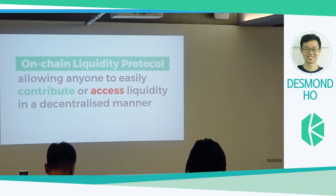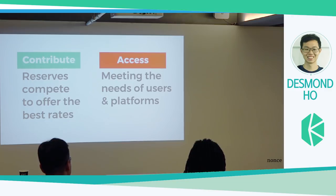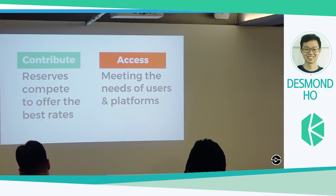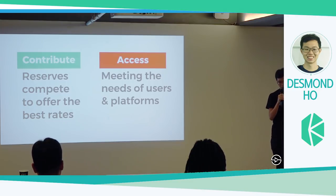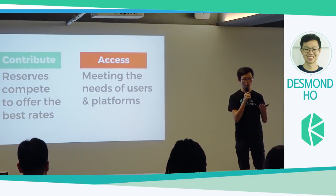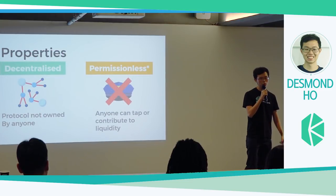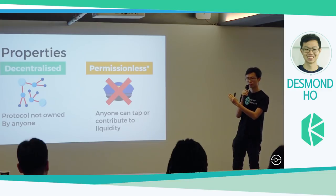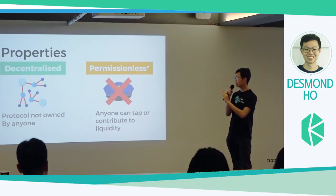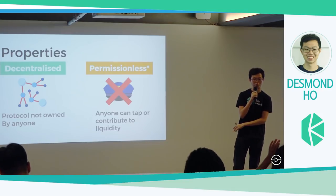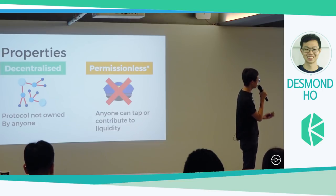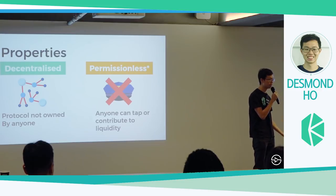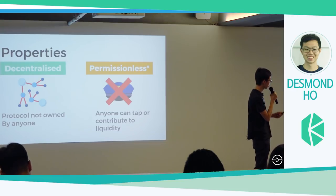There are two parts to this: contribution and access. For contribution, anybody who wishes to contribute liquidity can do so by becoming a reserve, and reserves compete to offer the best conversion rates. But that's not the focus today. My focus is on access — how you can access Kyber's protocol to meet the needs of your platform or project. We have two main properties: number one, it is decentralized — not fully yet, we are working towards that — meaning this protocol is not owned by anyone. Number two, it is permissionless: anyone can tap onto liquidity, and we're working towards opening reserves so you don't need a legal opinion to list your tokens.